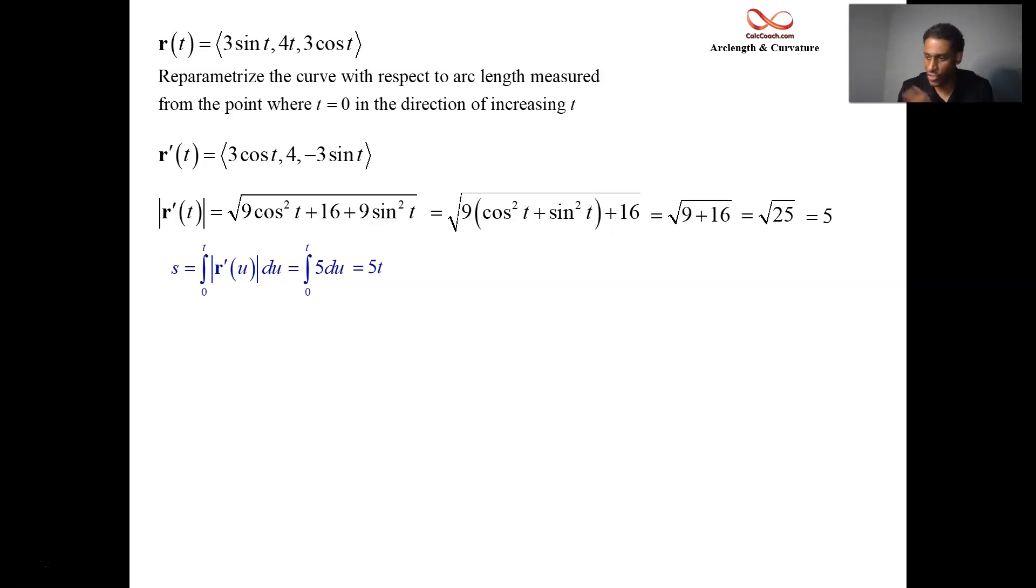So this is your connection. This is your formula that connects S to T. It says that the S, the distance traveled, is equal to five times the time. So we want to flip that and replace all of our T's with S's. If S equals five T, then T equals S over five. We take the position function, rip out all the T's, and put in S over fives. Three sine S over five, four times S over five, three cosine S over five. Now, it's a function of arc length.